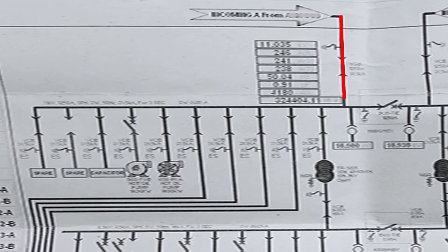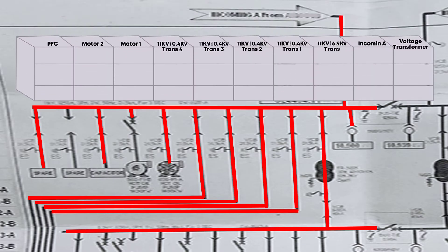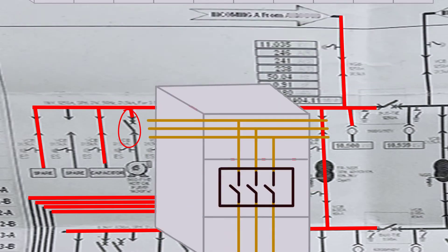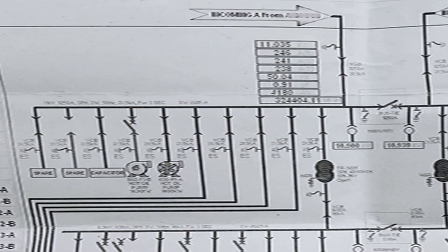When the circuit breaker is on, the power will energize the bus bars which run through all switchgears in the substation. When this bus bar is energized from incoming A, it will provide input power to all circuit breakers on section A. For example, this motor has input power from the bus bar to its circuit breaker, and when the circuit breaker is on, power moves through the cable room cables to the motor. The first circuit breaker in section A provides power to an 11 kV to 6.9 kV three-phase power transformer.